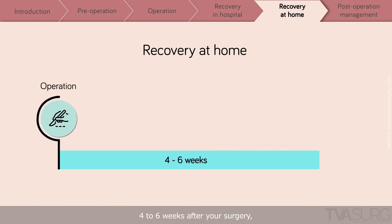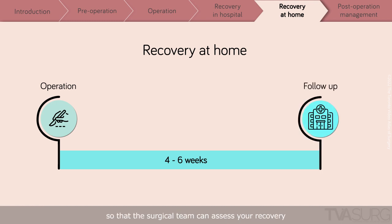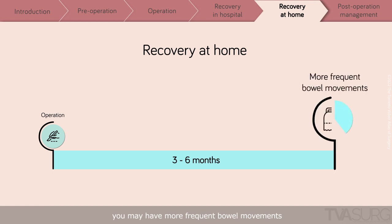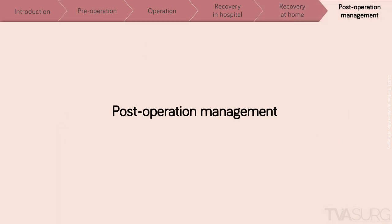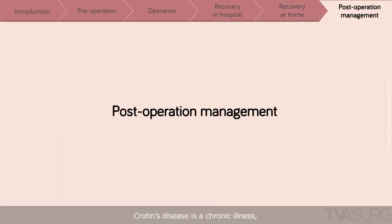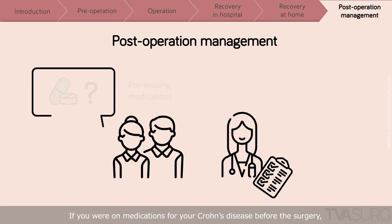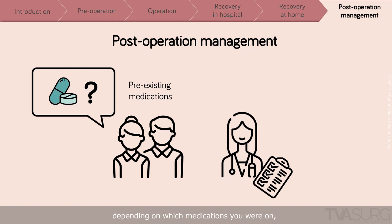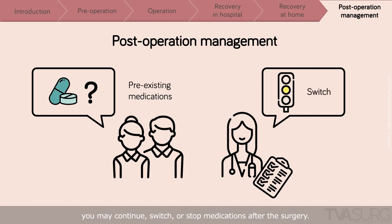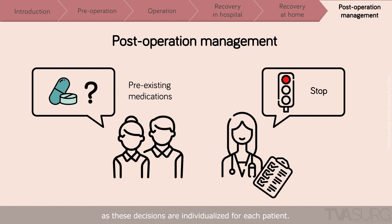Four to six weeks after your surgery, you will return to the surgery clinic so that the surgical team can assess your recovery and discuss the results of your surgery. In the first 6 months after your operation, you may have more frequent bowel movements as your body accommodates to the new connection. Crohn's disease is a chronic illness and you will continue to be followed by your gastroenterologist to continue management of your disease. If you were on medications for your Crohn's disease before the surgery, depending on which medications you were on and the reasons for your surgery, you may continue, switch, or stop medications after the surgery. Please be sure to discuss this with your gastroenterologist, as these decisions are individualized for each patient.